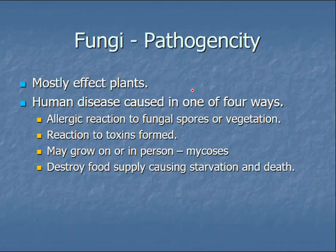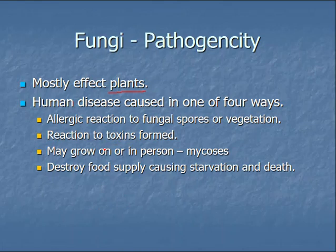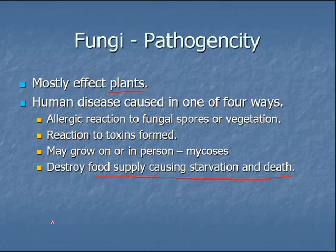Fungi mostly cause indirect issues with people, although there are some infections. They mainly affect plants — you can get fungal infections of foods you're trying to grow. If you're growing tomatoes or roses, rough spots can be types of fungal infections. The damage to our food supply is the most direct problem with fungi — it can destroy and reduce food supply in areas. In some parts of the world, a major spread of fungus on crops can devastate the food supply for a group dependent on it for that year.